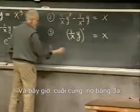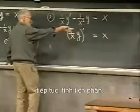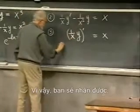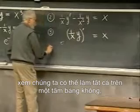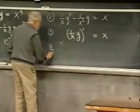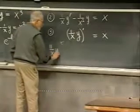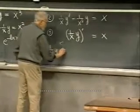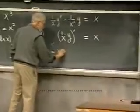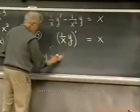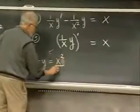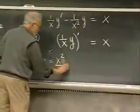That's 3a. Do the integration, and you're going to get — let's see if we can do it all on one board — one over x times y is equal to x squared over two plus a constant.